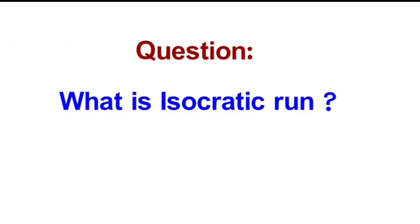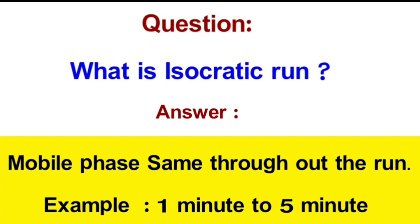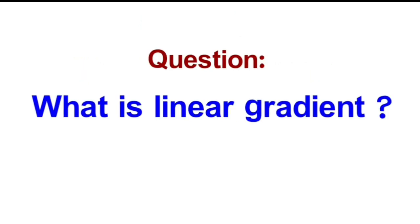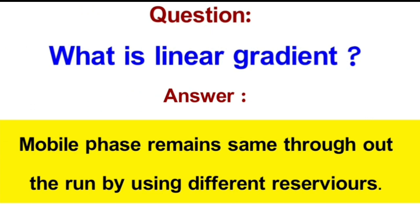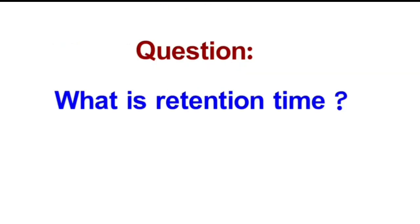Question: What is isocratic run? Answer: Mobile phase remains the same throughout the run, for example 1 minute to 5 minutes. Question: What is linear gradient? Answer: Mobile phase remains same throughout the run by using different reservoirs.